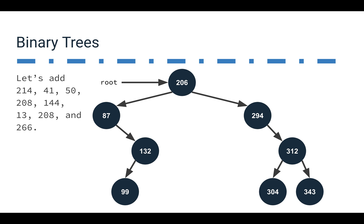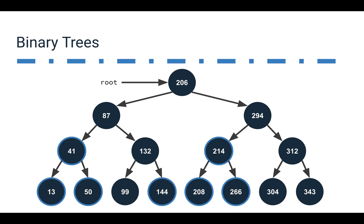Adding a bunch of other values — 214, 41, 50, 208, 144, 13, and 266 — fills in the rest of the tree. Now we've got this organized structure where every one of these nodes follows the same rules and the same pattern.